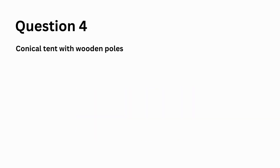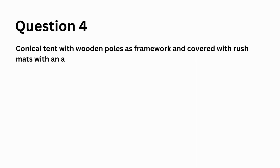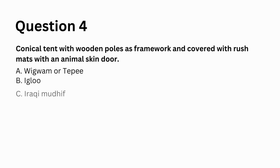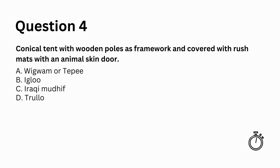Conical tent with wooden poles as framework and covered with rush mats with an animal skin door: a. Wigwam or teepee, b. Igloo, c. Rocky mudhiff, d. Etrulo. Answer: a. Wigwam or teepee.